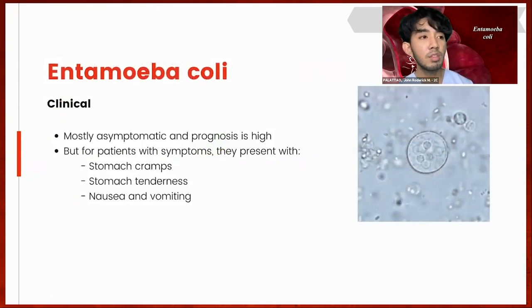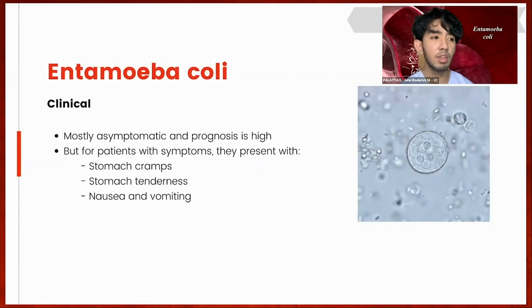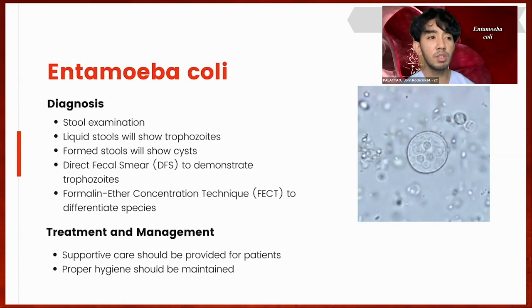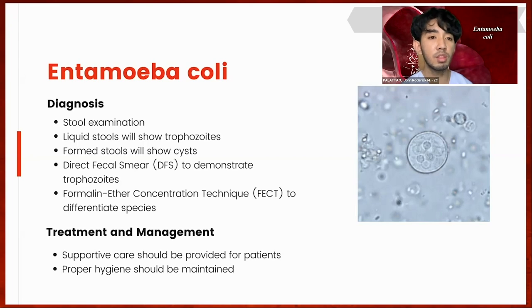For the clinical picture of Entamoeba coli, they are mostly asymptomatic with usually high prognosis. For patients with symptoms, they present with non-specific stomach cramps, stomach tenderness, nausea, and vomiting. For diagnosis, stool examination is performed: liquid stools will likely yield trophozoites, while formed stools will likely yield cysts. A direct fecal smear demonstrates trophozoites, while the formalin ether concentration technique (FECT) will differentiate the species.